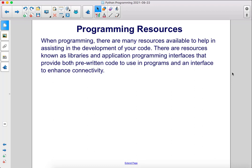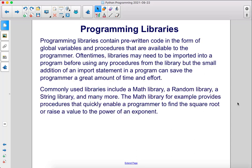There are resources known as libraries and application programming interfaces that provide both pre-written code to use in programs and an interface to enhance connectivity. Programming libraries contain pre-written code in the form of global variables and procedures that are available to the programmer.